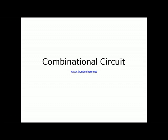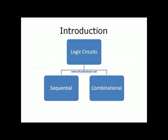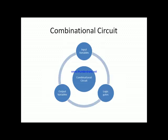Today we will discuss the topic of combinational circuits. In digital electronics, logic circuits are divided into two categories: sequential circuits and combinational circuits. In sequential circuits, the output depends upon present inputs as well as past inputs, whereas in combinational circuits the present output depends only upon the present input combination. A combinational circuit consists of three components: input variables, output variables, and a set of logic gates.